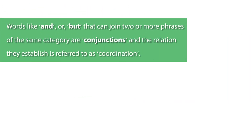We have a set of words in English which are closed class — they're called conjunctions — like words such as 'and,' 'or,' and 'but.' What do these words do? They join two or more phrases of the same category. There are certain rules you have to follow when using these coordinating conjunctions.